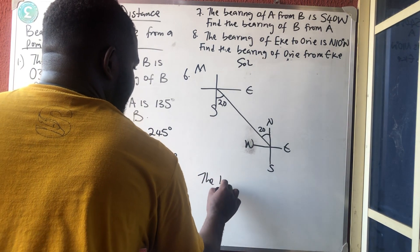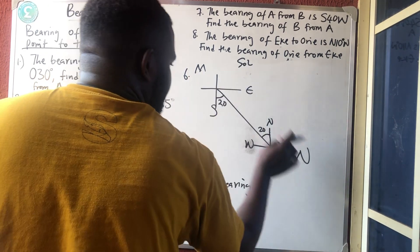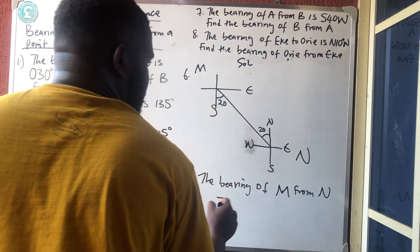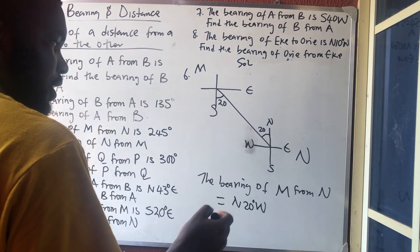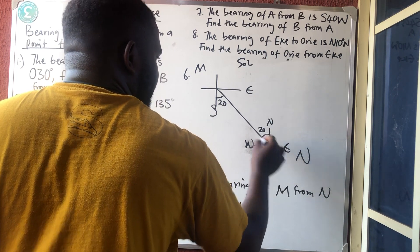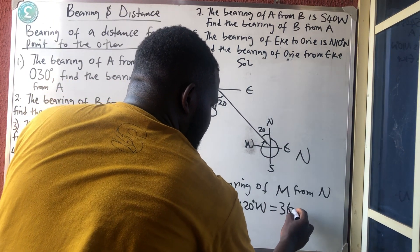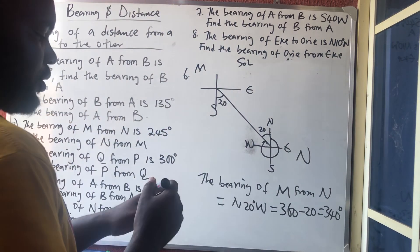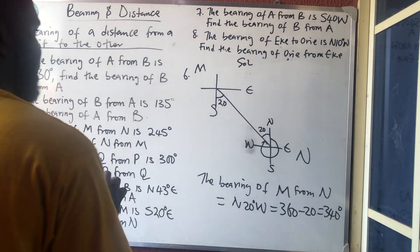You tell them that the bearing of M from N is equal to north, 20 degrees west. If you want to get it in degrees: you start from the north, move clockwise till you touch this line. Since 20 is not part of it and the total circle is 360, my answer should be 360 minus 20 equals 340 degrees. The answer could be 340 degrees or north 20 degrees west.